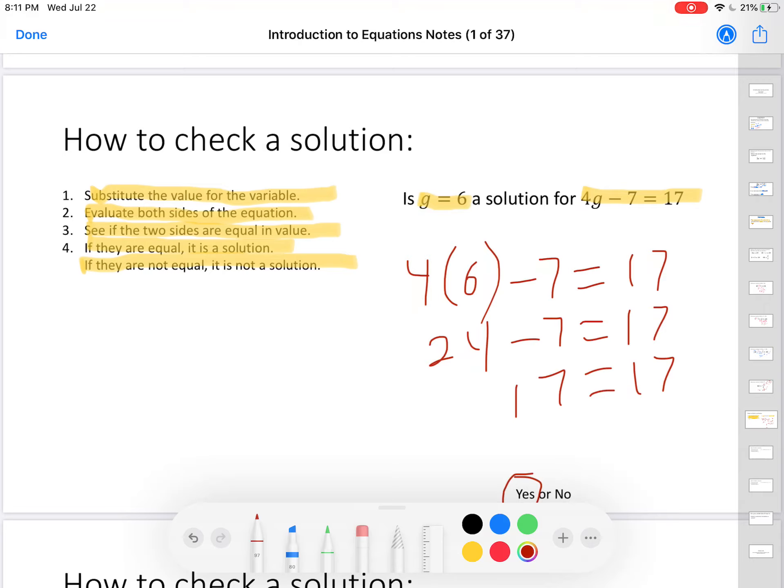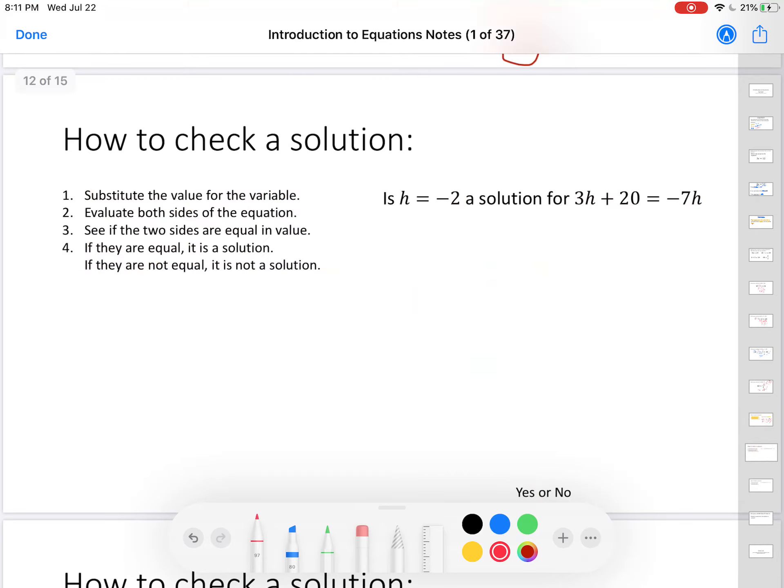Then, you show your evaluation and you show the details of the evaluation until you get down to one number equaling the same number. If they come out the same, you circle yes. If they come out differently, you circle no. Here is another example. Same steps.